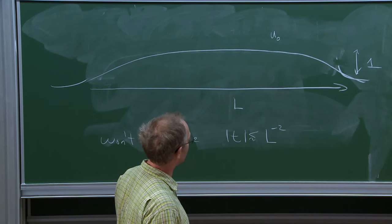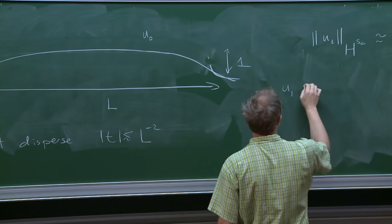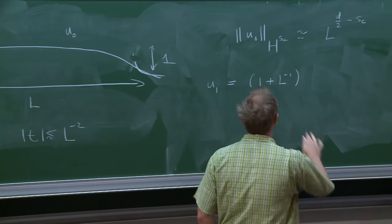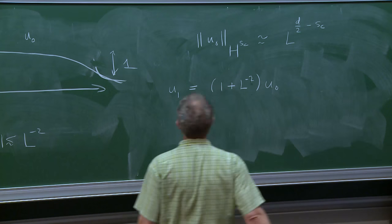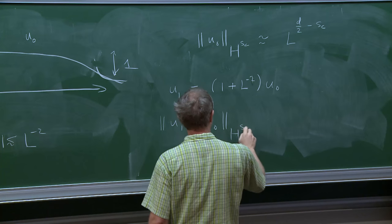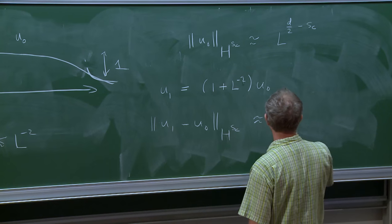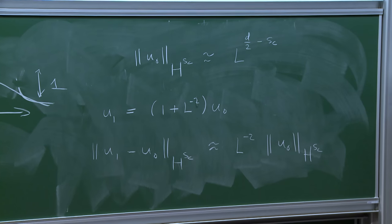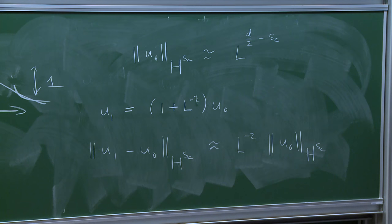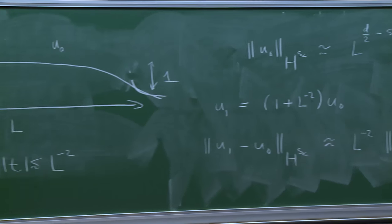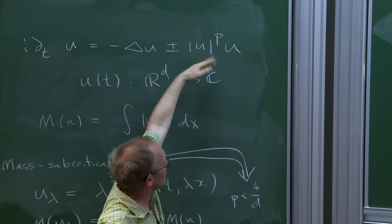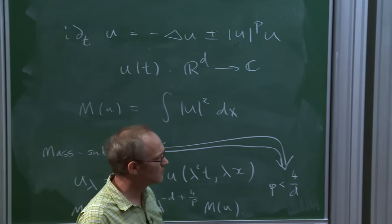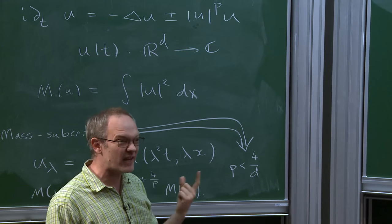The nonlinear effect can have an effect over this time scale. Consider another initial data u_1, which is (1 + L^{-2}) times u_0. You can see that u_1 is relatively close to u_0—it's about L^{-2} times the norm of the initial data, which is a huge number. At times near the end of this interval, one equation has 1^p and the other has (1 + L^{-2})^p. Over a time interval of length L^{-2}, that adds up to a phase shift of about size 1.